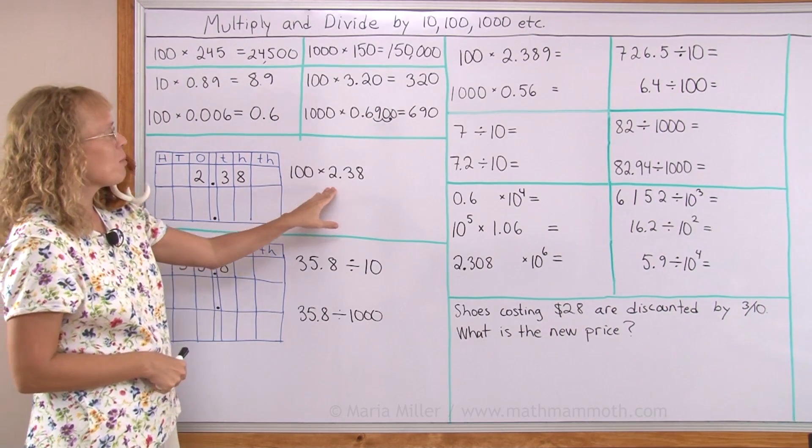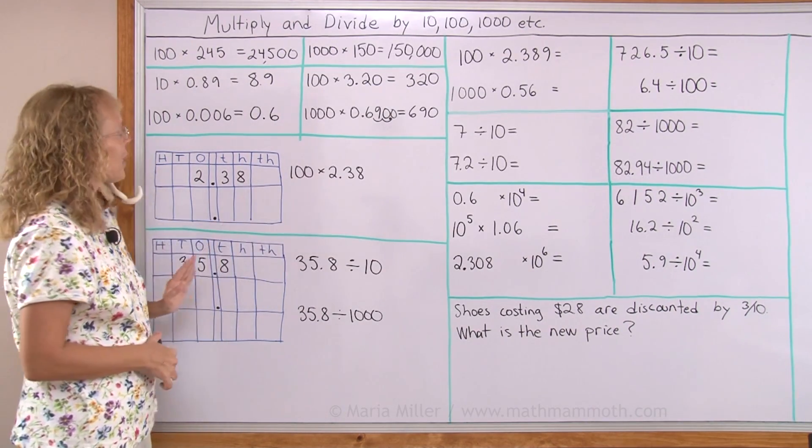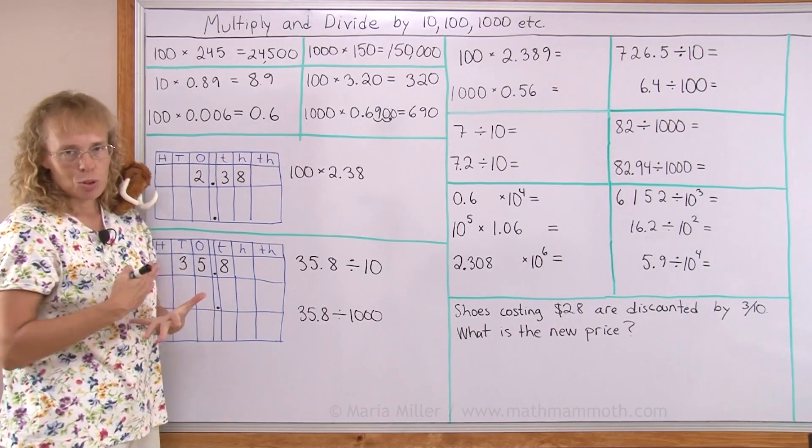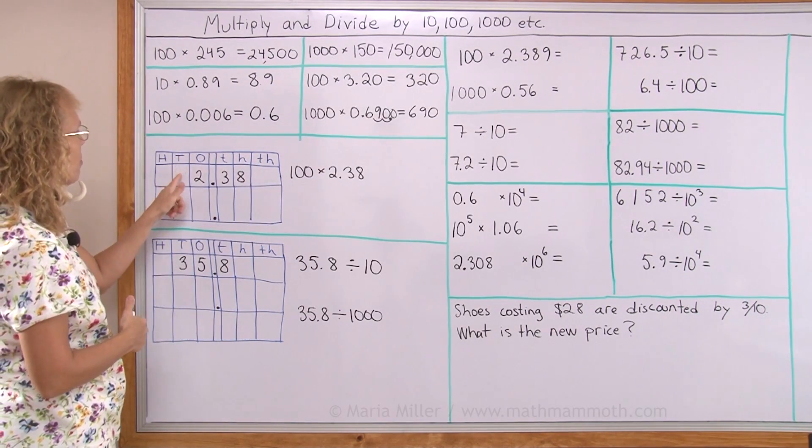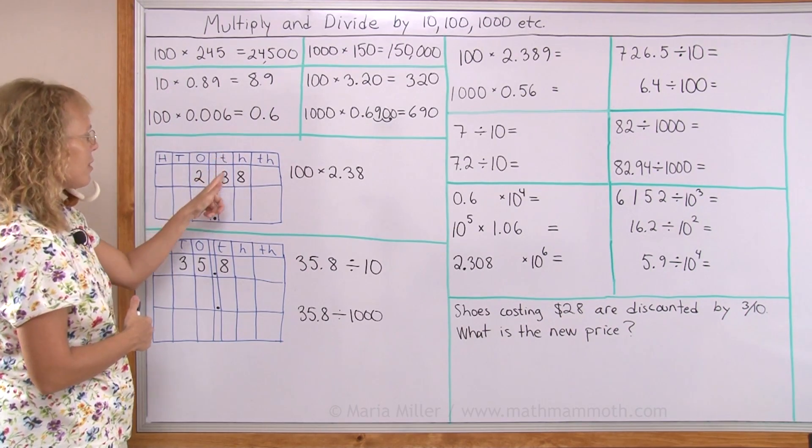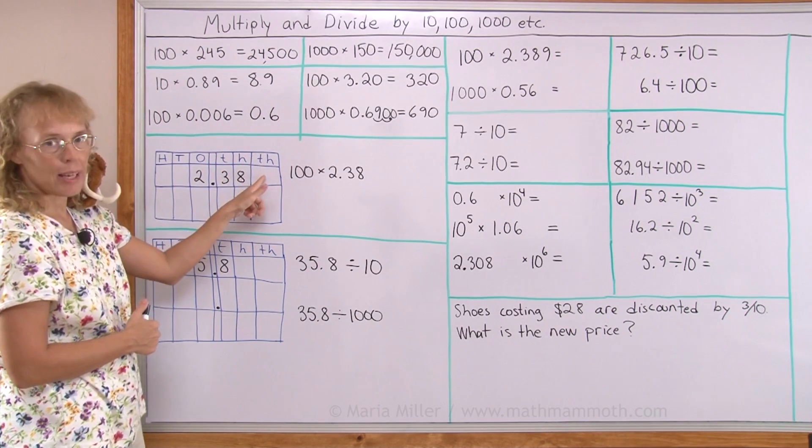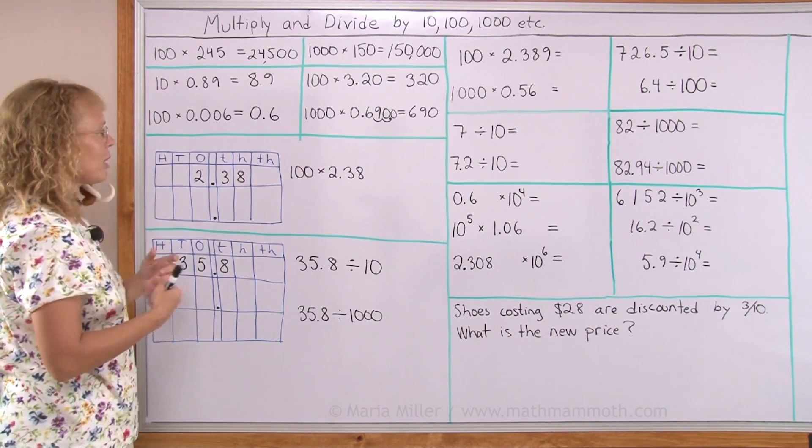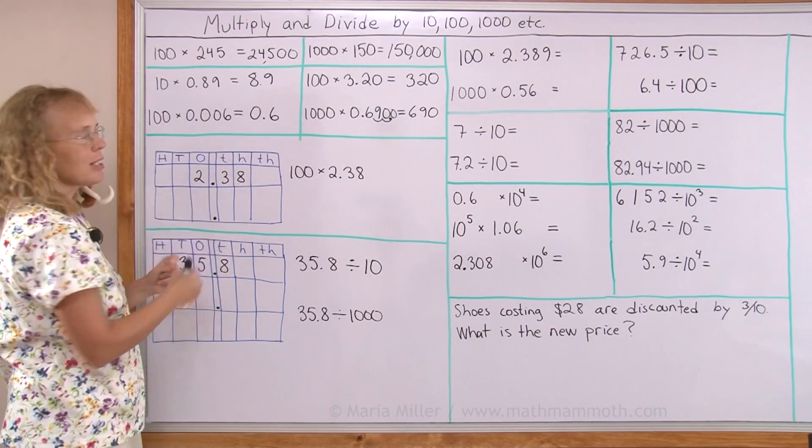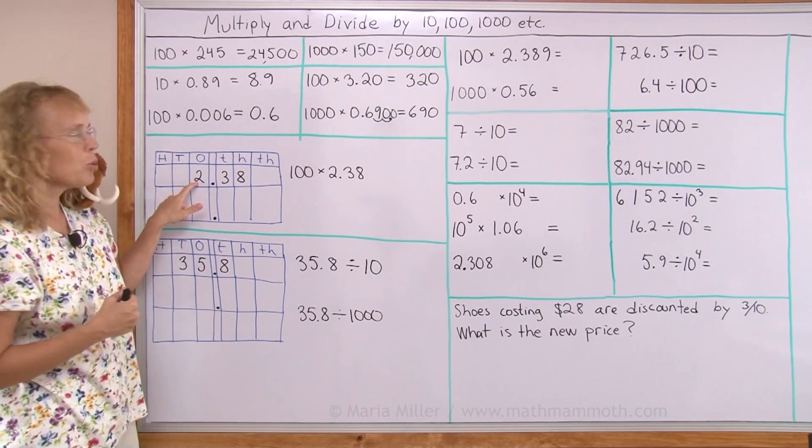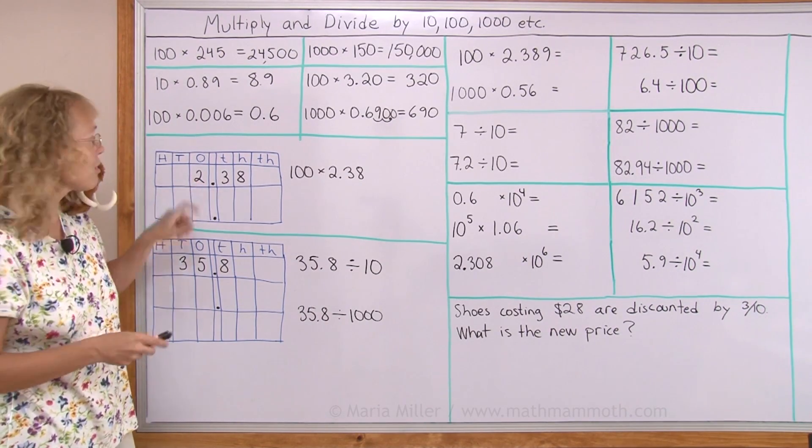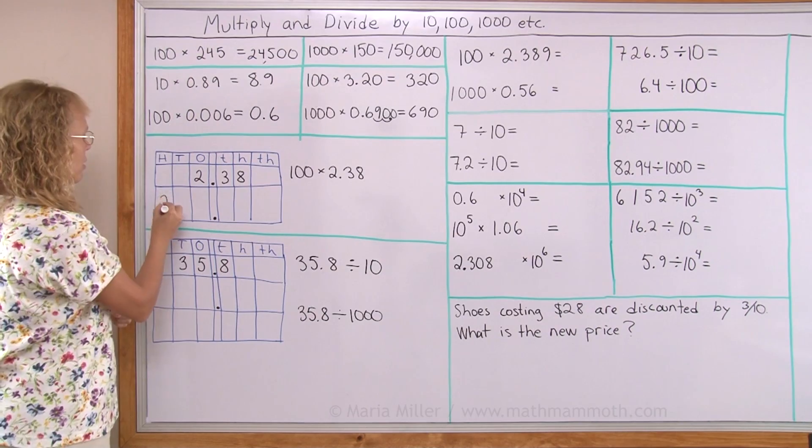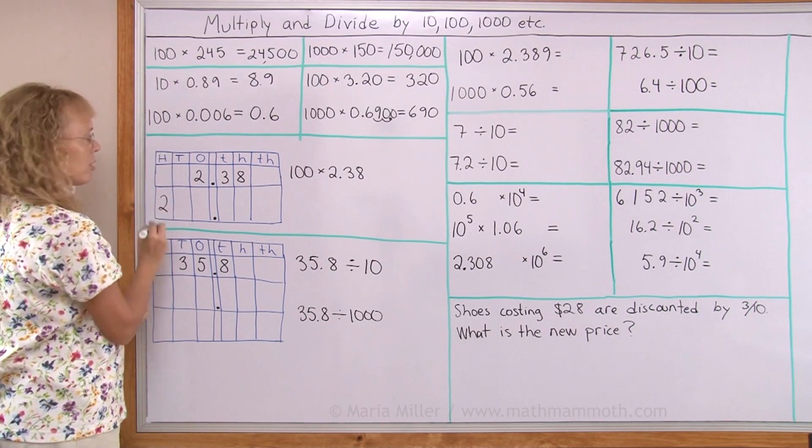My problem is 100 times 2.38. And I wrote my number 2.38 in this place value table. Here's hundreds place, tens place, ones place, the point, tenths, hundredths, and thousandths place. And now what happens is when we multiply by 100, I can think of each place value unit separately. What happens to 2 when I multiply it by 100? It becomes 200. So I would have to put 2 here in the hundreds column, hundreds place.